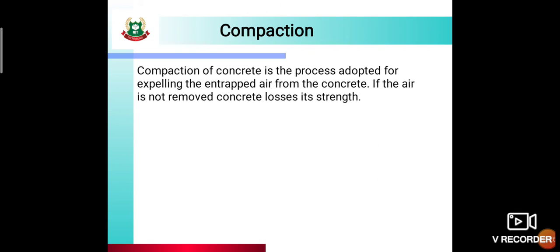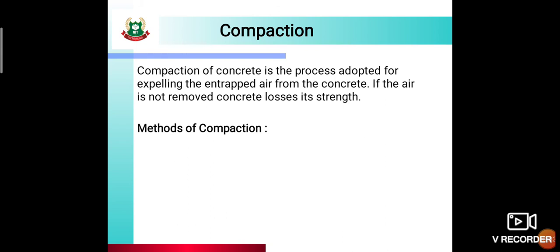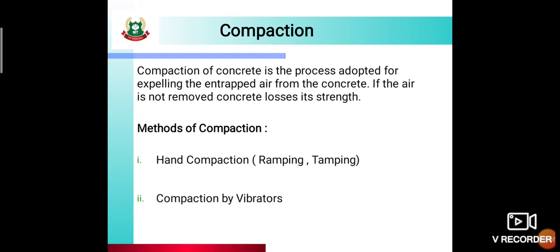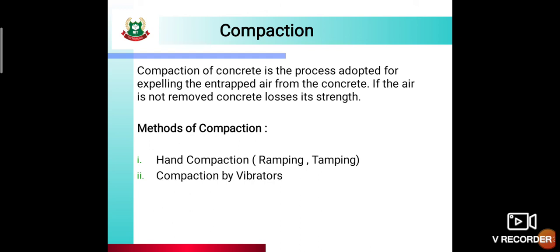Methods of compaction: First is rodding and tamping — using a tamping rod, the hard bottom side is fixed and we do tamping with a tamping rod. Second is compaction by vibrator — a needle vibrator or artificial vibrator which can be used in large construction projects. These are the methods of compaction of concrete.